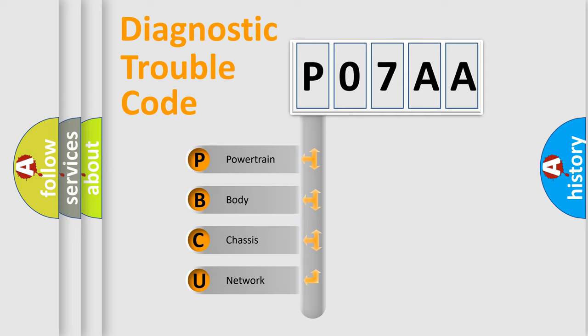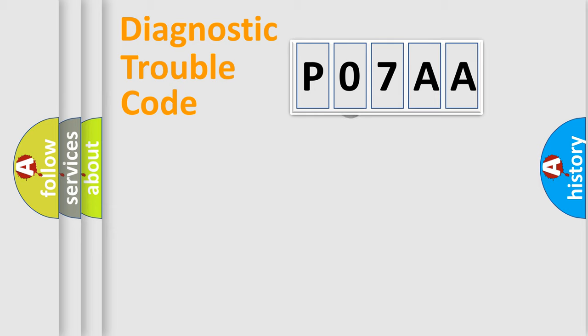We divide the electric system of automobile into four basic units: powertrain, body, chassis, network. This distribution is defined in the first character code.